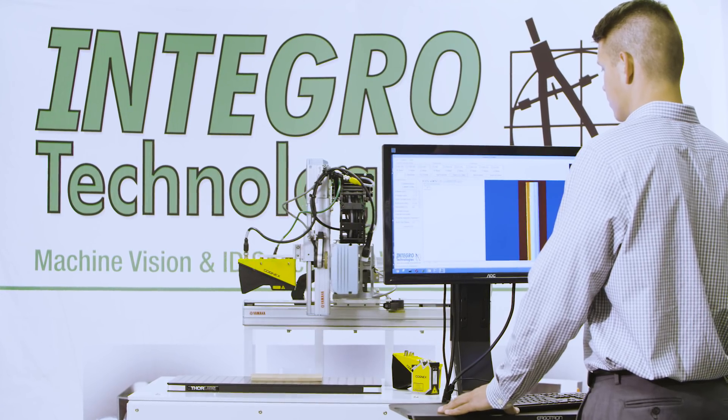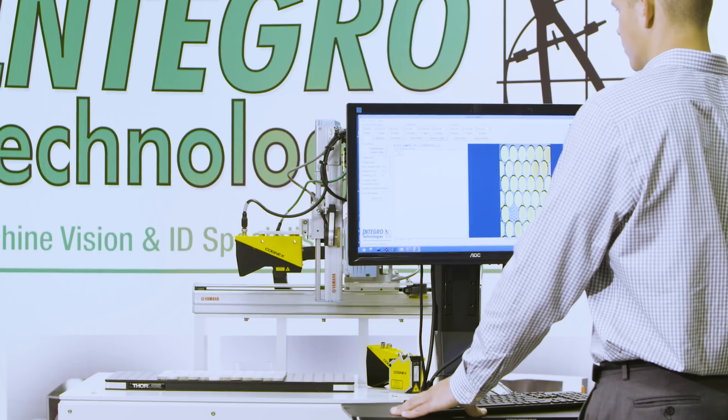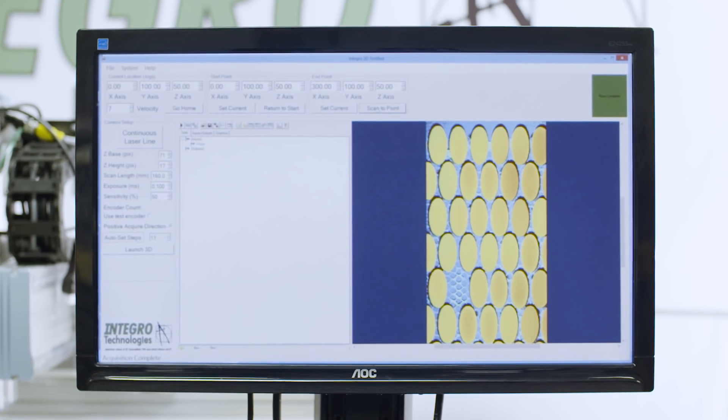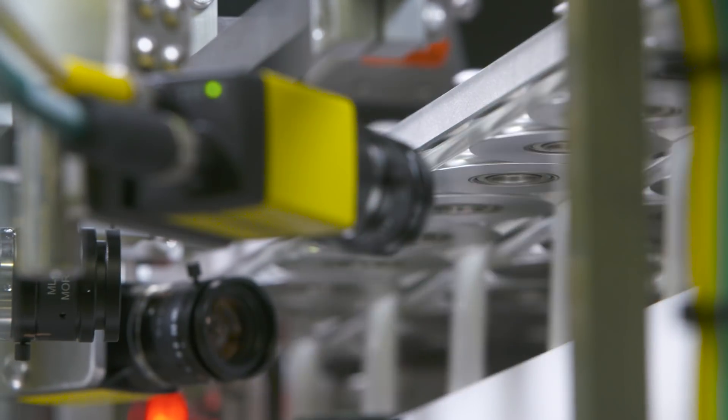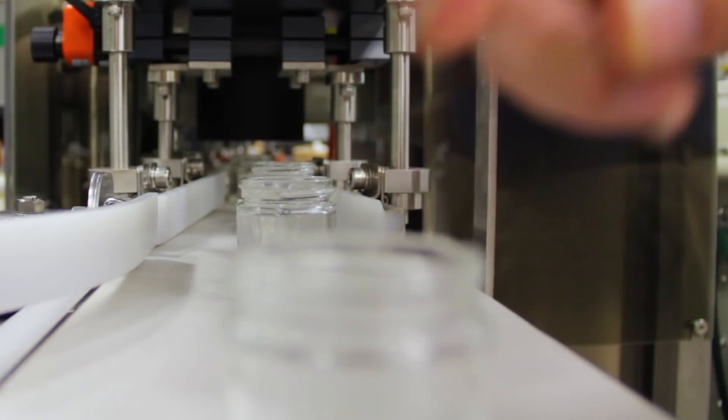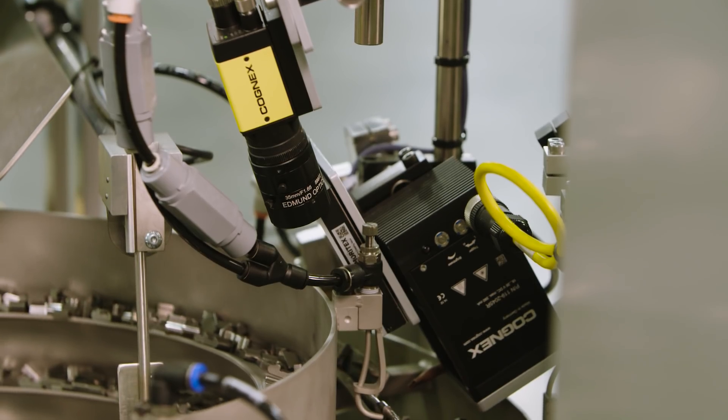In addition to developing state-of-the-art customized inspection solutions for end users and machine builders, Integro also provides Vision 911 field engineering support on current and legacy Cognex products. Integro's Vision 911 program encompasses remote and on-site engineering support services to resolve machine vision or ID issues quickly and cost-effectively.